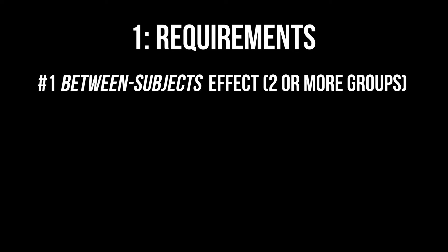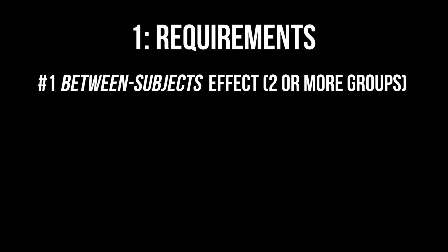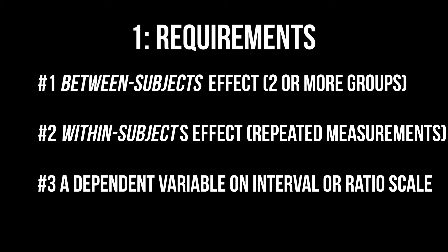Let's briefly talk requirements for the mixed ANOVA. A between-subjects effect, that is, at least two groups of individuals, usually a control group and an intervention or experimental group. A within-subjects effect, that is, repeated measurements for all individuals. A dependent variable on an interval or ratio scale.